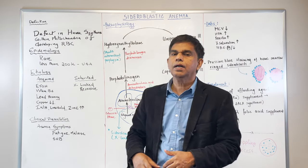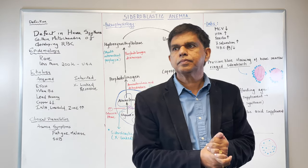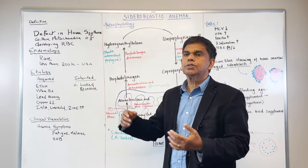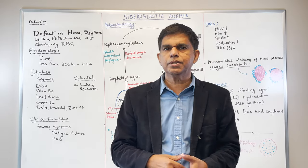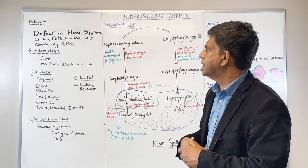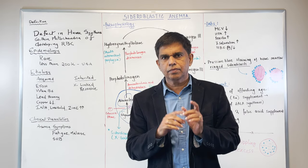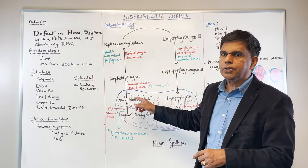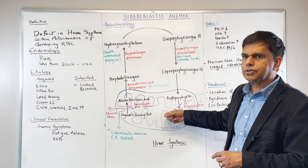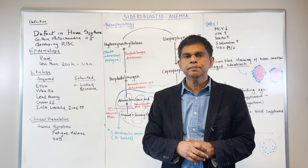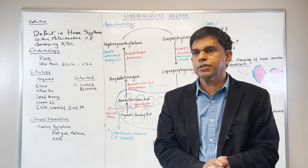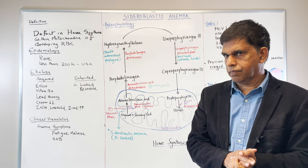So what is sideroblastic anemia? What does sideroblastic mean? Sidero means heme or iron, and the blastic means immature, and anemia is decreased RBC. The definition of sideroblastic anemia is a defect in heme synthesis. Where does it happen? In the mitochondria of the RBC. The definition: defect in heme synthesis within the mitochondria of developing RBC.